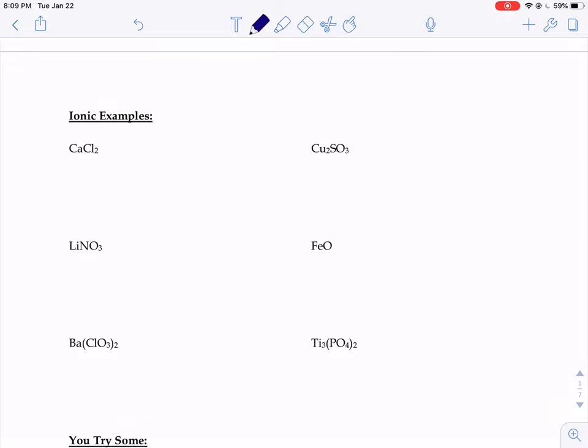Let's try a few naming of ionic compounds. If you have CaCl2, your first job is to write the name of the metal. So if you see the symbol Ca, we just have to write down what Ca is called: calcium.